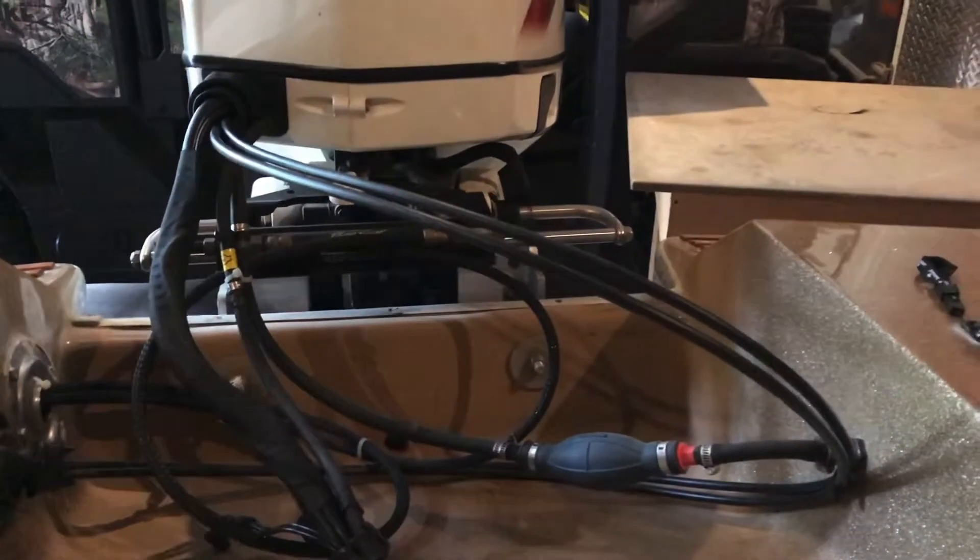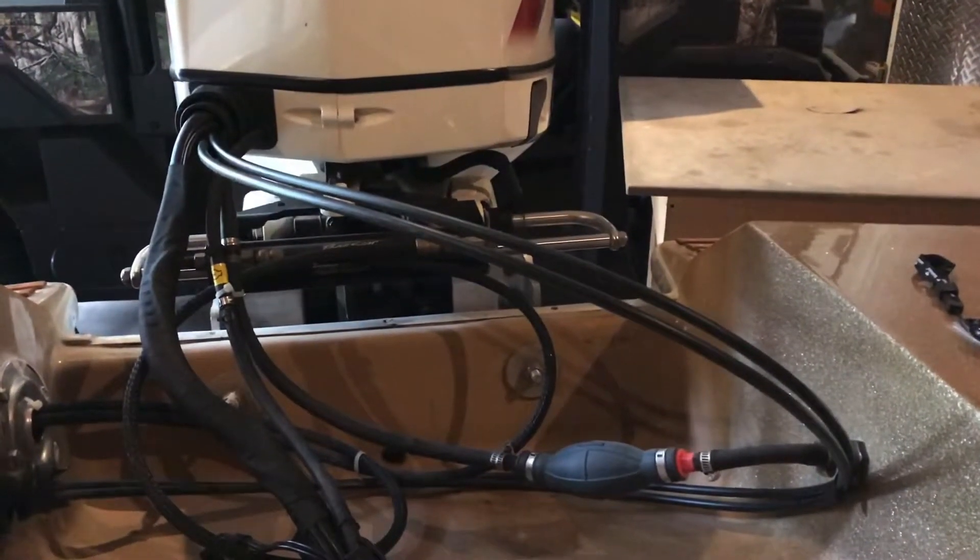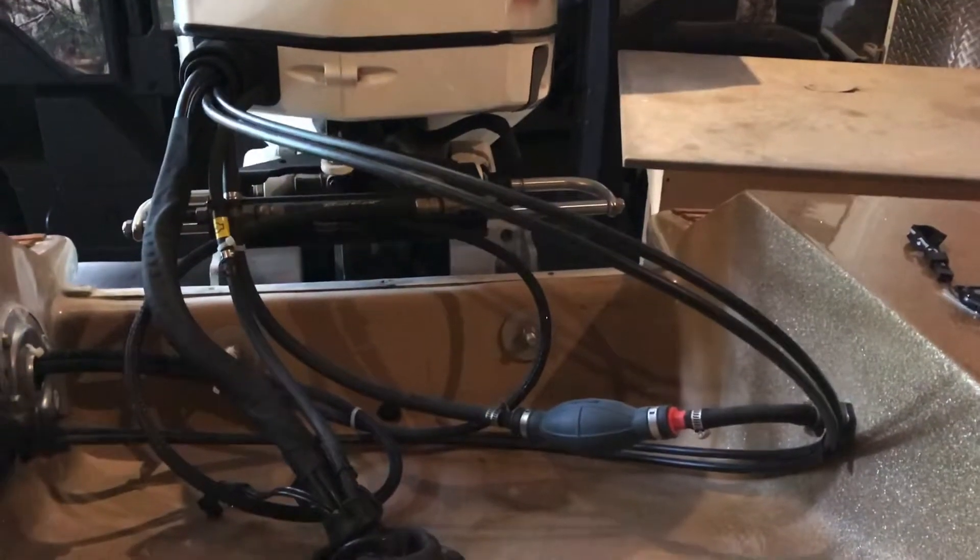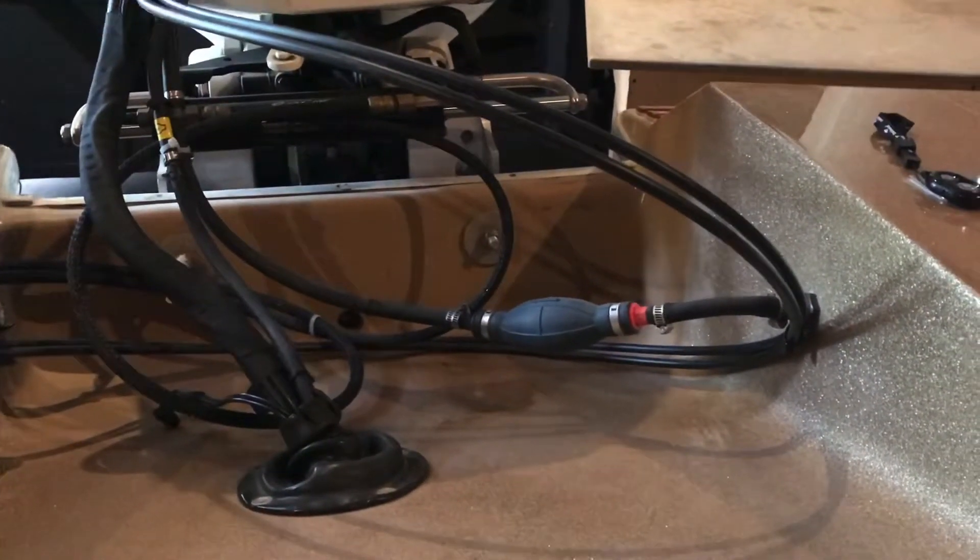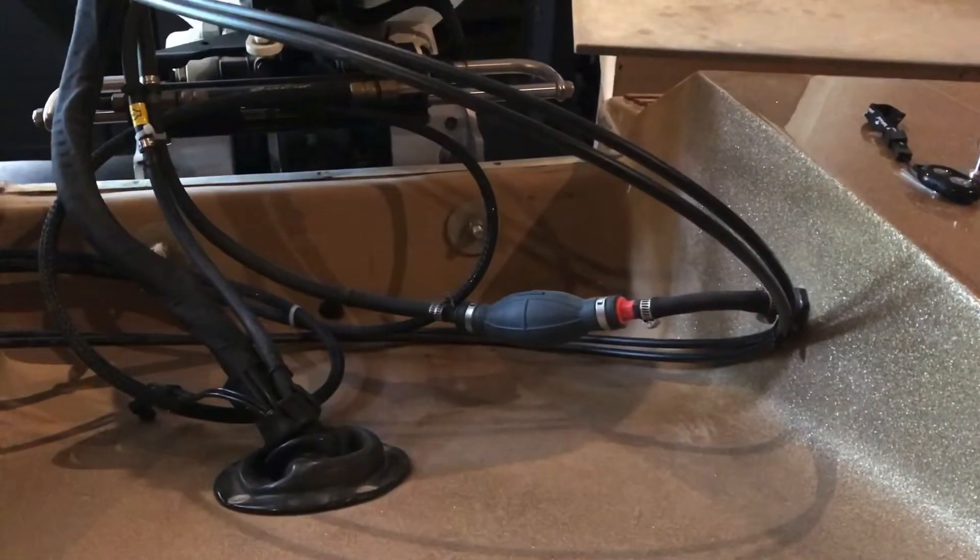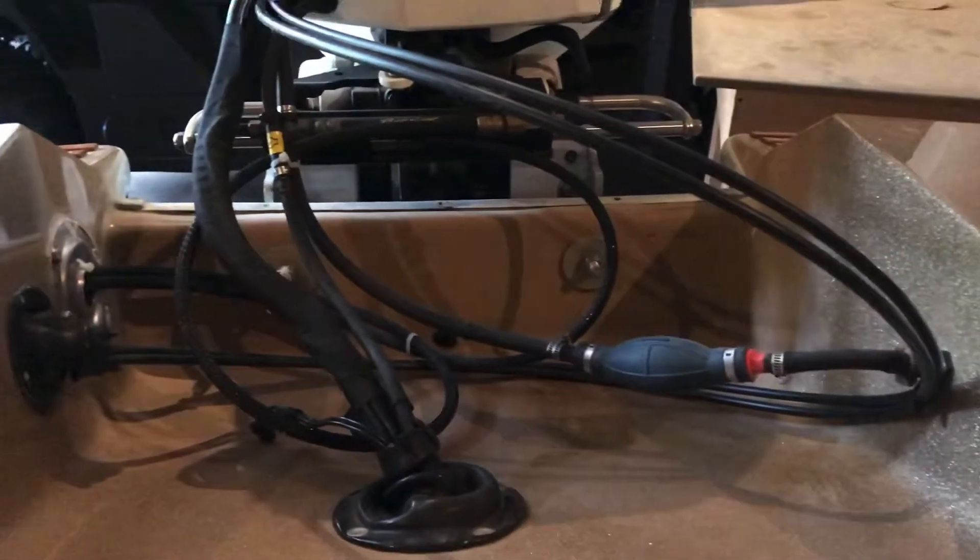This is a 1979 Glastron CVX 16. We're currently looking at the aft end where the boat well is and where the well ties in to the transom.